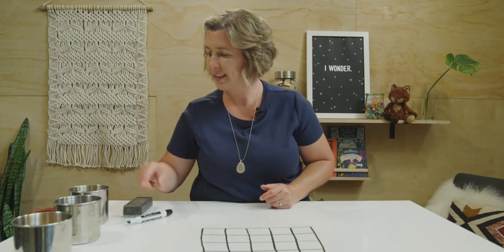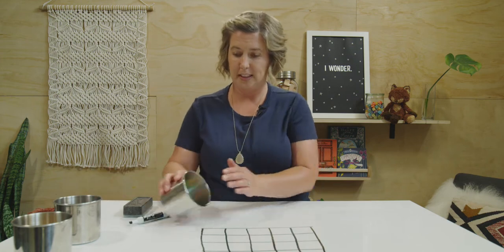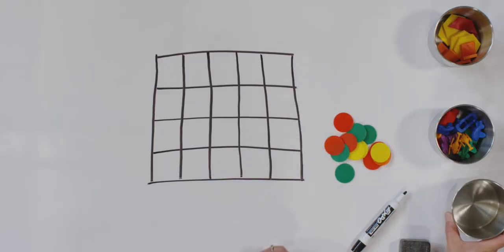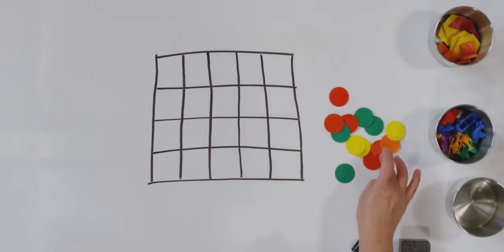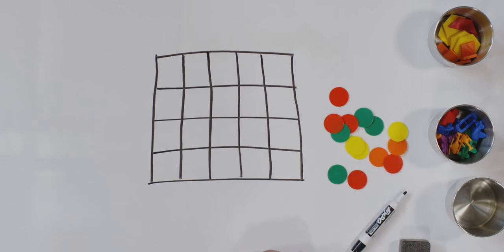I'm going to do the first graph and I want you to watch and follow along. I have circles. Let's spread them out. Now, can you tell your teacher what colors you see? I see red, green, yellow, and orange.